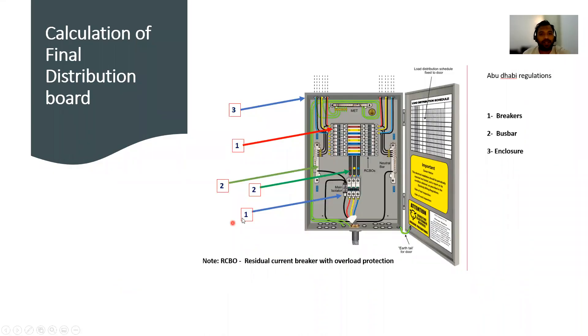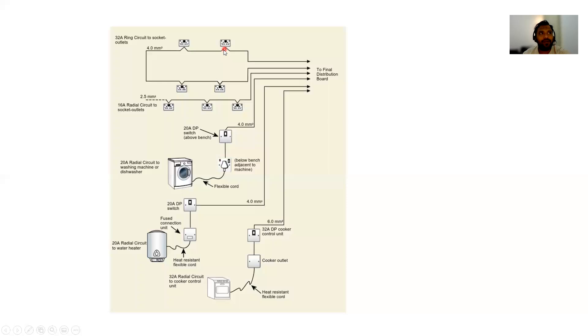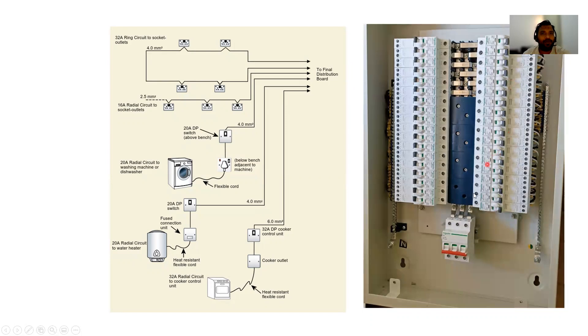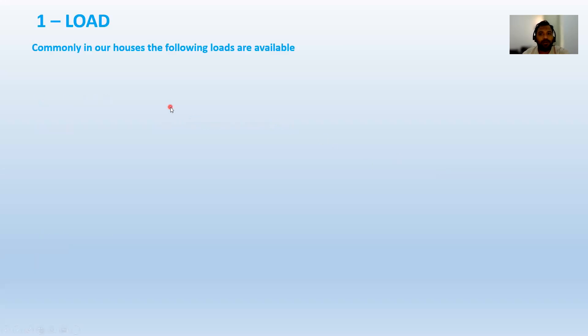Now let us start the calculation part. We have a distribution board, and as explained in earlier videos, we need loads distributed and connected to the board. Here I have socket loads — a ring circuit with two incoming power supplies, and a radial circuit with one incoming power supply — along with washing machine, water heaters, and a cooker, all connected with phase, neutral, and earth.